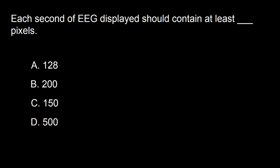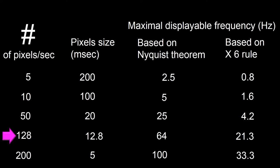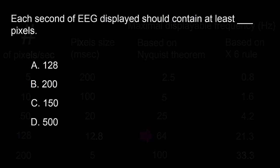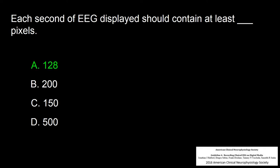Next question: each second of EEG displayed should contain at least dash pixels. A: 128, B: 200, C: 150, D: 500. The answer is 128 pixels per second, which gives a pixel size of 12.8 milliseconds and a maximal displayable frequency of 64 Hz. The answer is A.